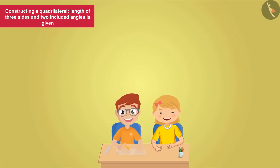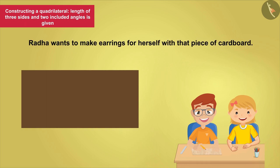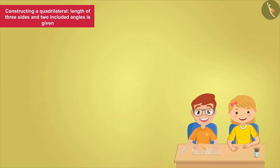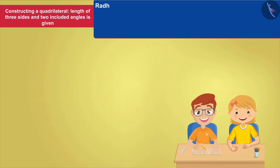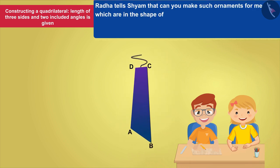Radha and Shyam have a piece of cardboard. Radha wants to make earrings for herself with that piece of cardboard.